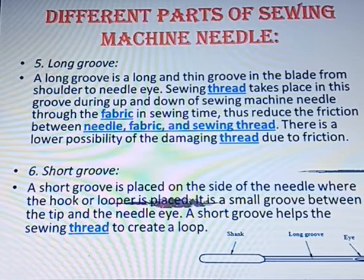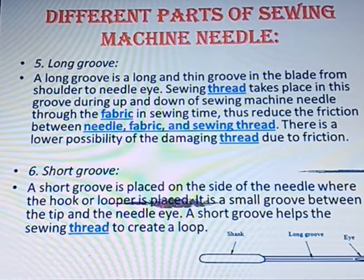Then we have the long groove. A long groove is a long and thin groove in the blade from the shoulder to the needle eye. The sewing thread sits in the groove during the up and down movement of the sewing machine needle. It helps to reduce the friction between needle, fabric, and sewing thread, so there is a lower possibility of damaging the thread due to friction.